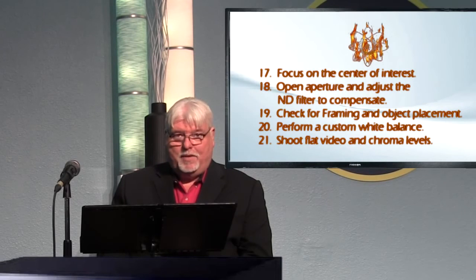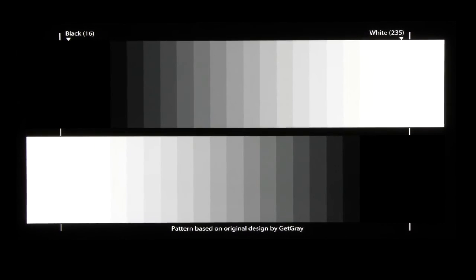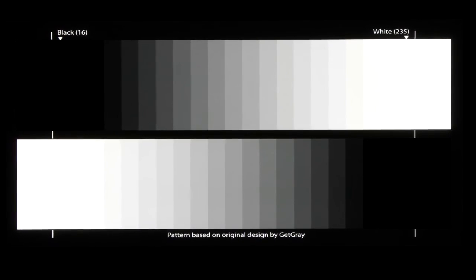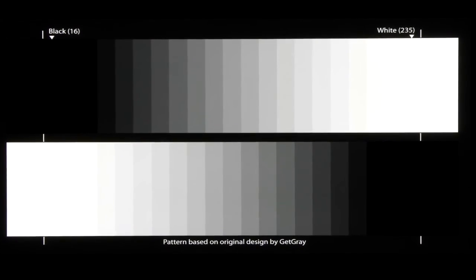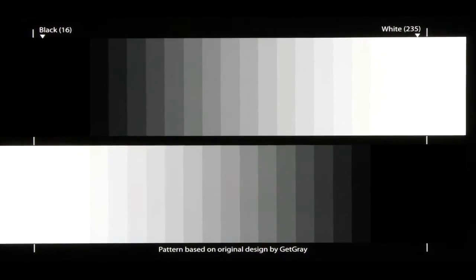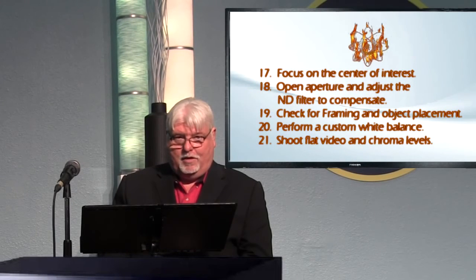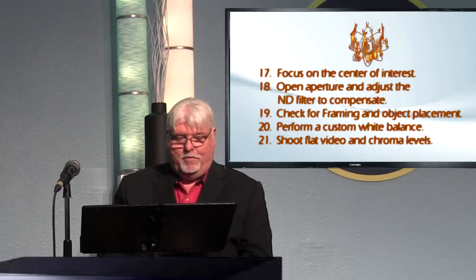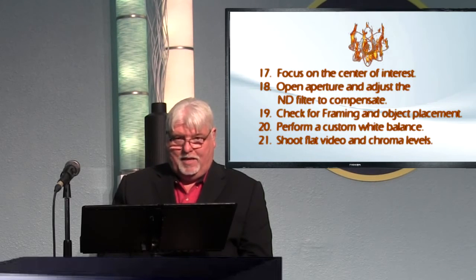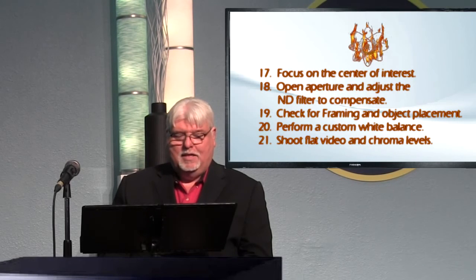You want to set up a custom white balance using a gray card or white card in your camera. Automatic white balance doesn't work for video because it's always adjusting depending on your scene, causing color drift. Find out what your primary source of light is and white balance to that using a custom white balance that remains fixed for the rest of your shot.